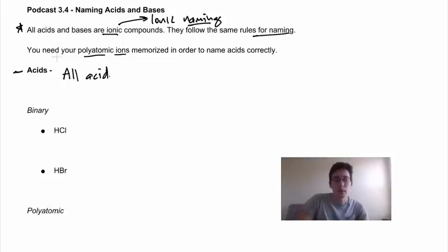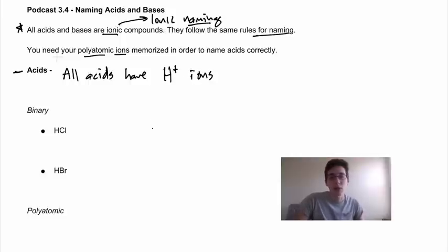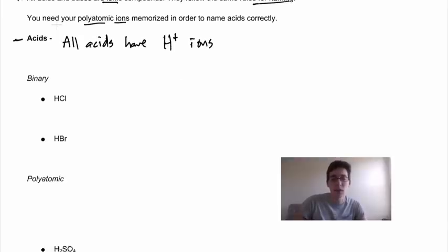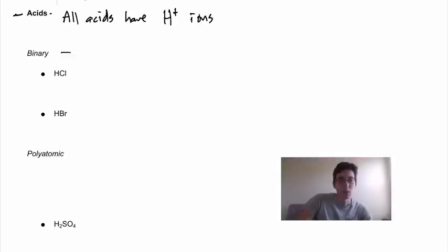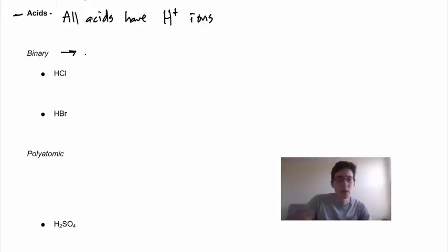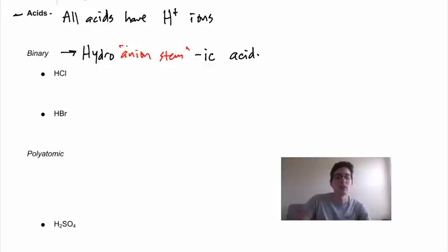How do we recognize acids versus bases? All acids have H+ ions, and you're going to see this general pattern as we look at different compounds. When naming binary acids, the rule is: hydro + anion stem + the suffix -ic + the word acid at the end. So: hydro-[something]-ic acid.